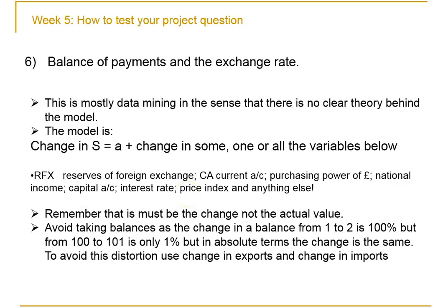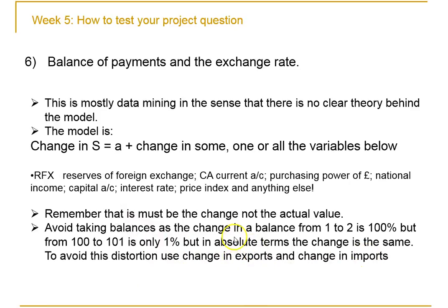Finally, we have the balance of payments model. As I say, this is a bit of a data mining model with no clear theory. The change in the spot rate is equal to the change in some, one, or all of the variables below — and anything else you can think of. It can be done well. Don't take balances — going from one to two is a huge percentage change, but the same absolute change from 100 to 101 is only 1%. It's better to take the elements of the balance: the exports and the imports.